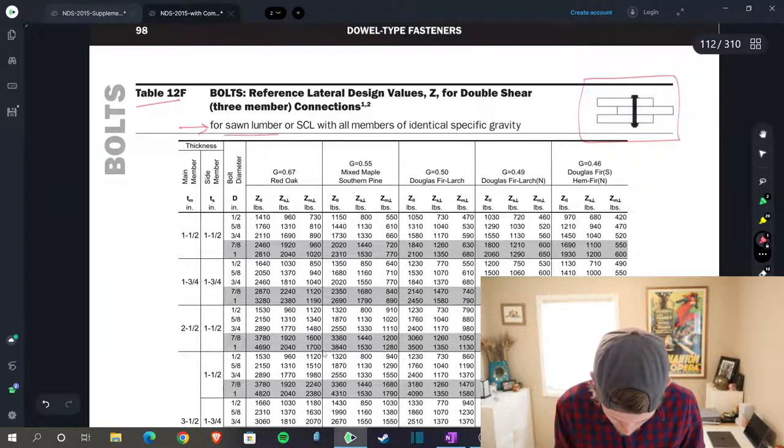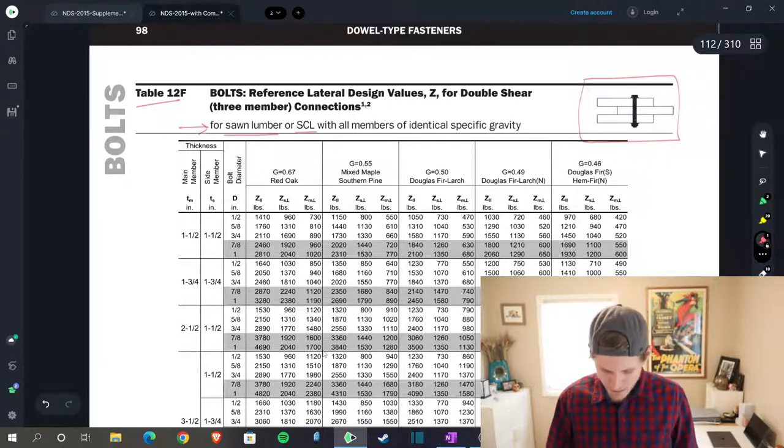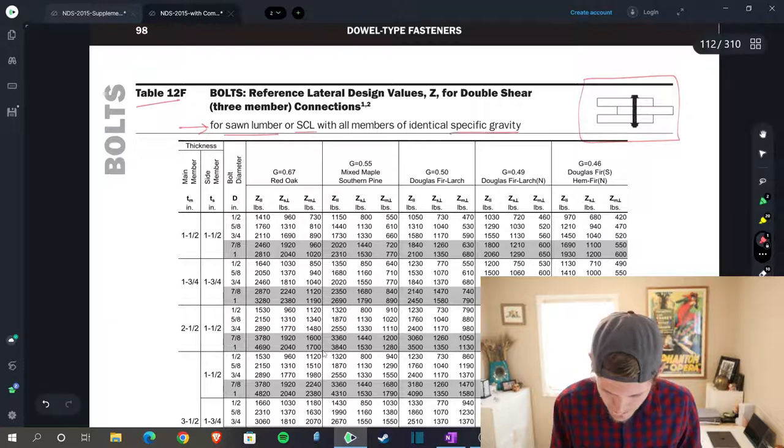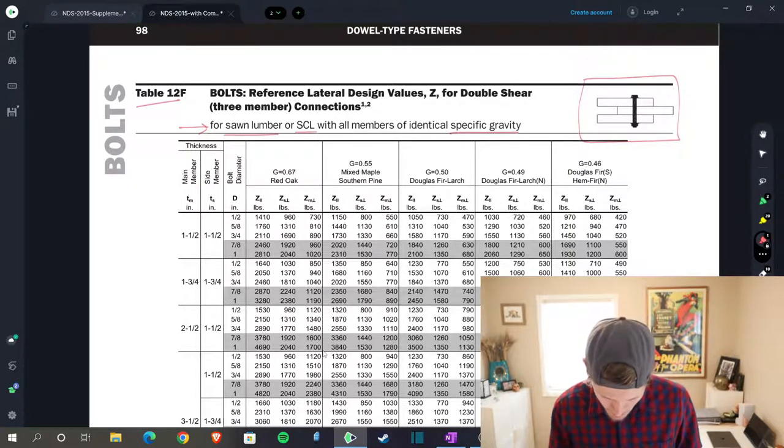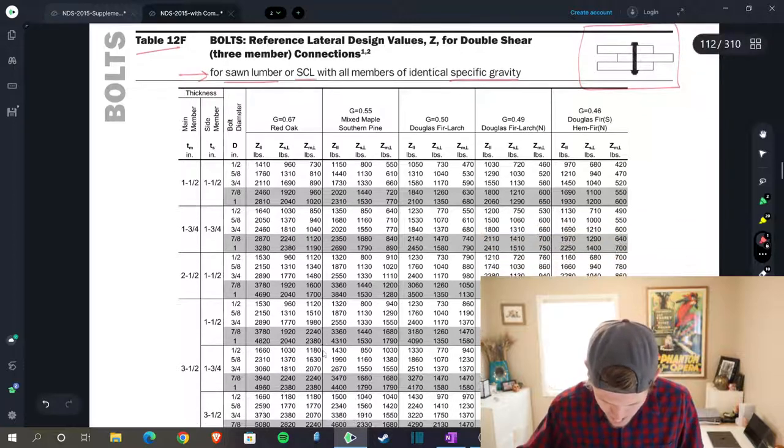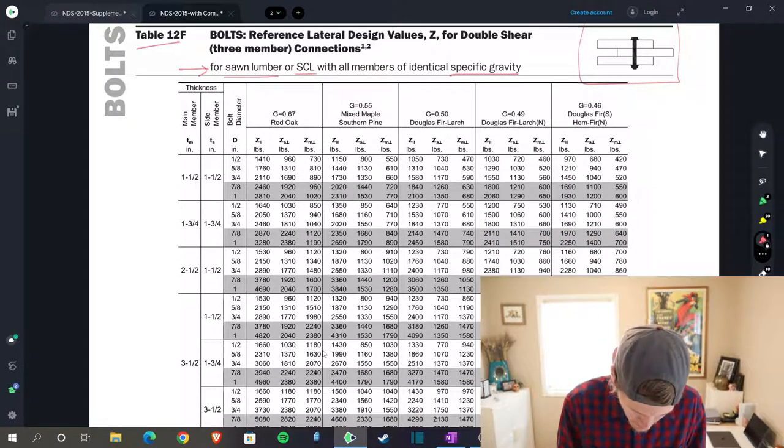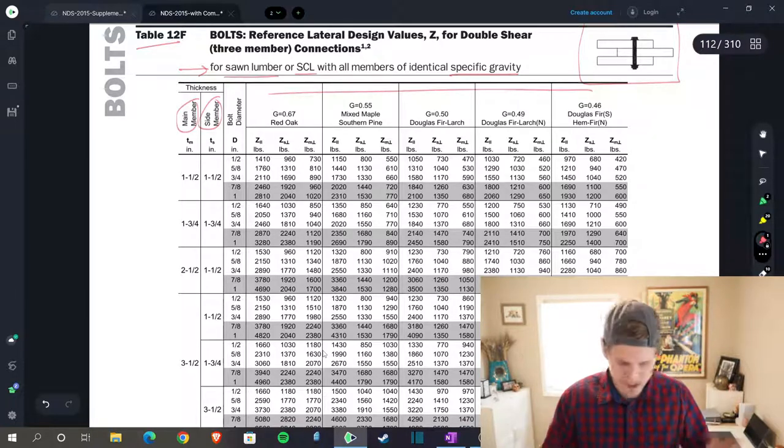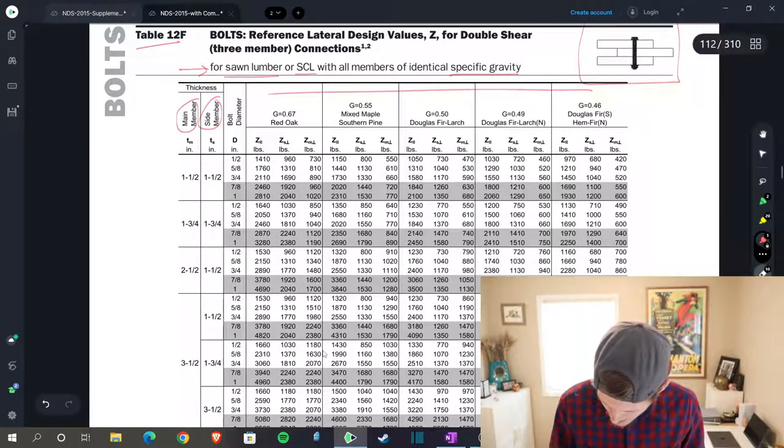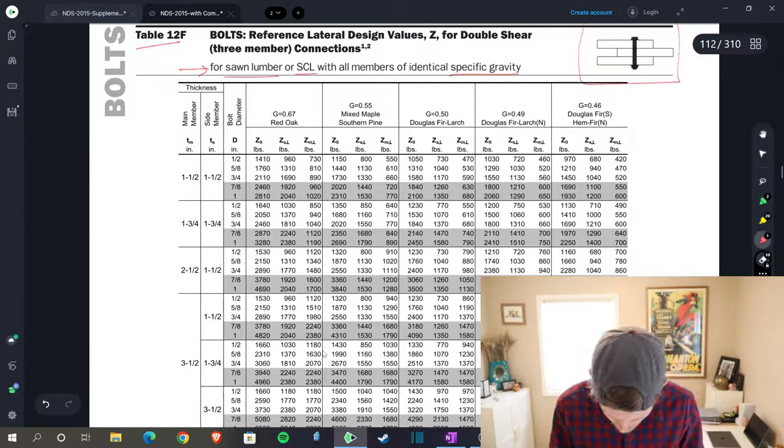For sawn lumber or structural composite lumber (SCL), all members of identical specific gravity—everything is the same, it's all southern pine—we're okay. We can use this table. First off, you can either do your main member and then side member and then your species up here, or you can do it vice versa. Let's start with our main and side members.